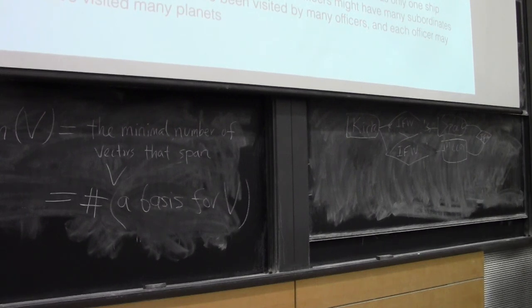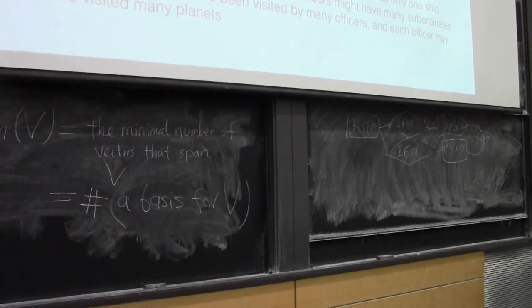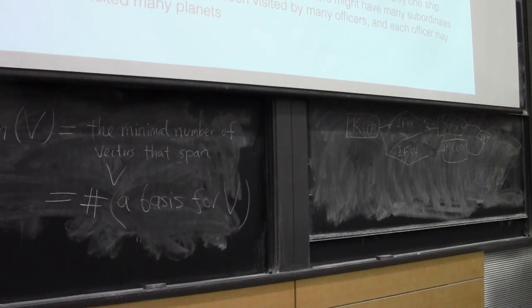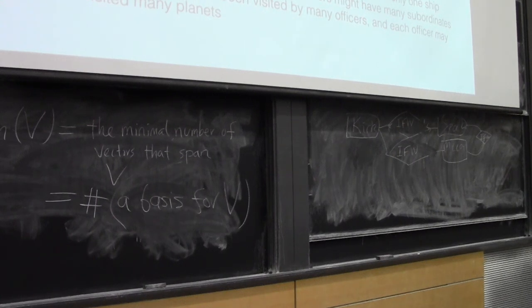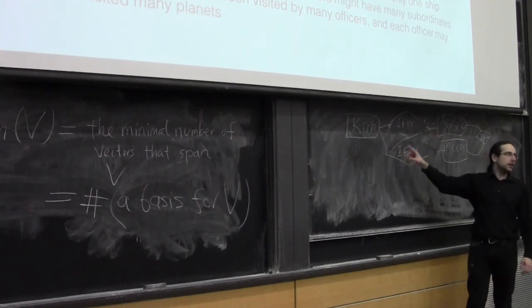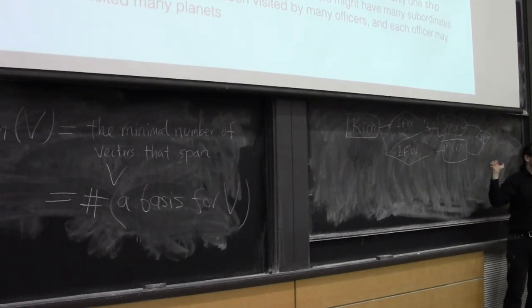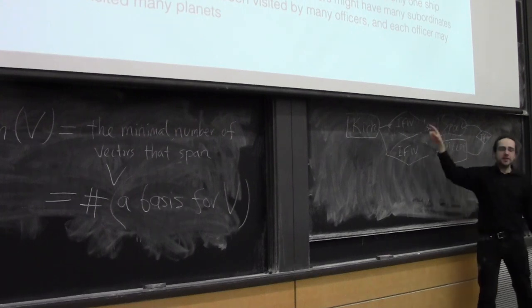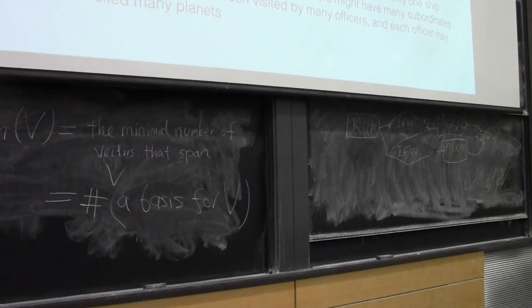[Student asks about representing directionality in a data type.] The entity relationship model doesn't have a way to denote acyclic relationships, but it does have the ability to denote that every officer is commanded by at most one other officer — that's the idea behind key constraints. Every relationship should be classified as either one-to-one, one-to-many, many-to-one, or many-to-many. We use an arrow on the lines to represent that an entity participates in at most one instance of that relationship.